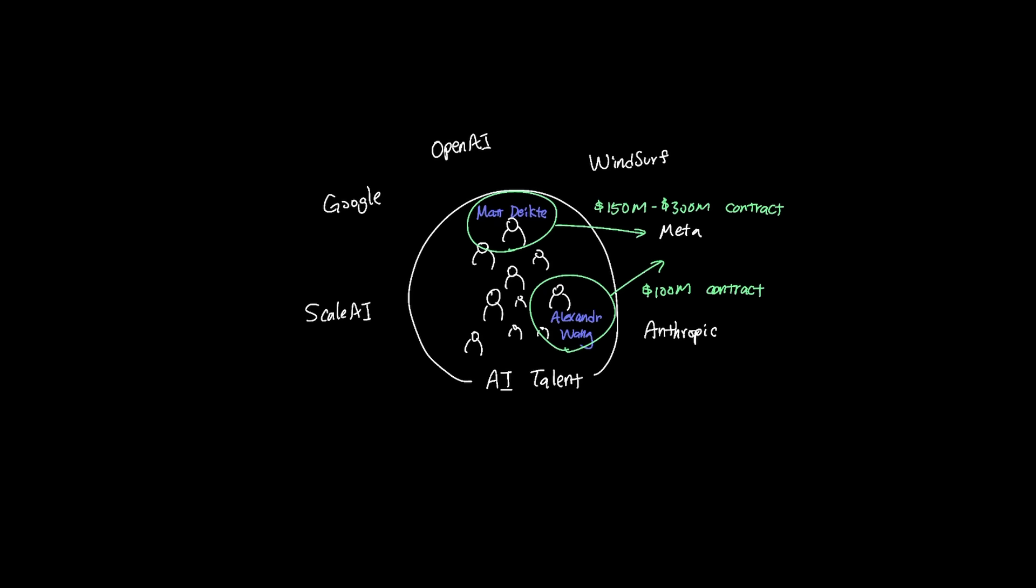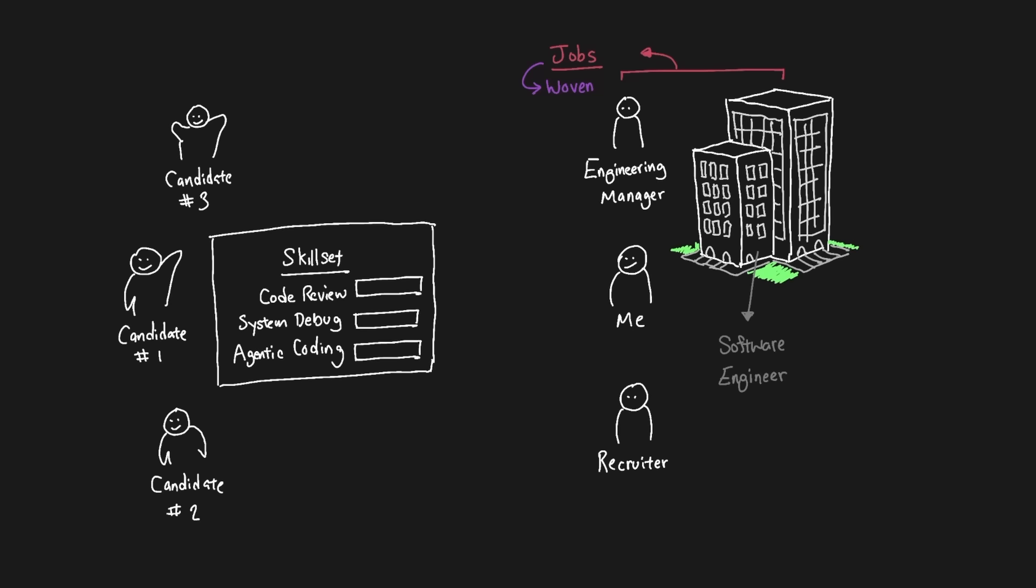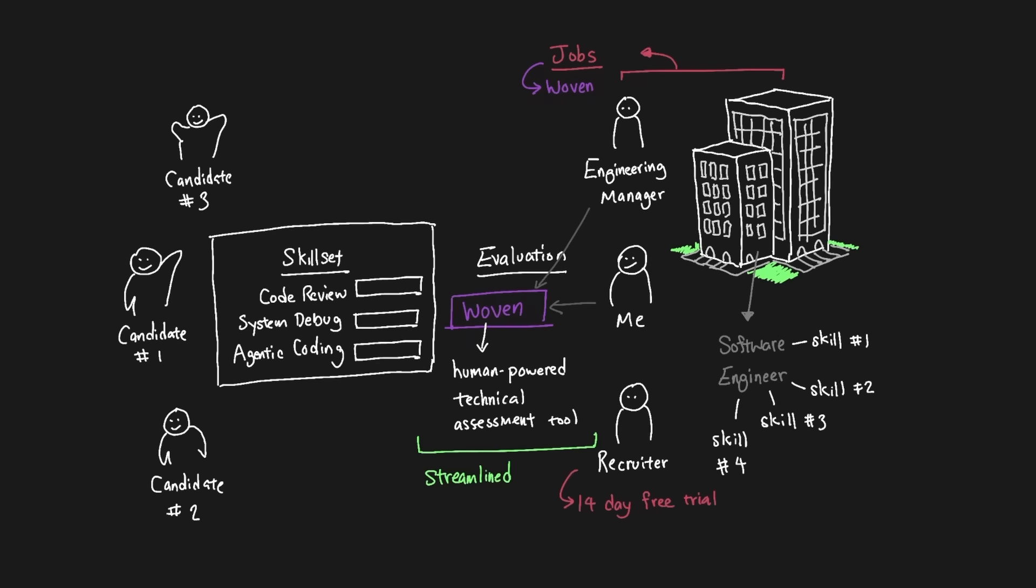And hiring the right talent can certainly cost a lot of time and hassle, which is why I wanted to do a 30-second description of Woven who's sponsoring this video. I've been looking to hire a software developer in my previous company, and one thing I always found was that candidates always had different skill sets. And some people were really good at code reviews, and others were good at system debugging, and now with AI, agentic programming. So coming up with coding evaluations for each role, it took a lot of time and effort to build scenarios and give feedback. It just wasn't fun for everyone involved in the process. Woven is a human-powered technical assessment tool that makes hiring streamlined. So if you're looking to hire engineers, Woven is offering 14 days free trial with 20% off of your first hire. Check the link in the description.